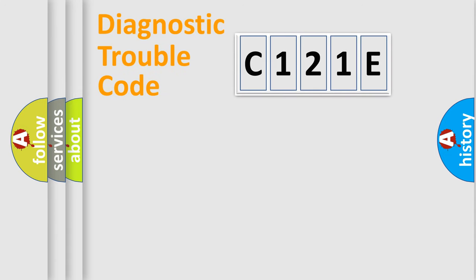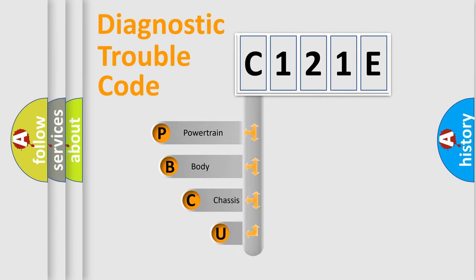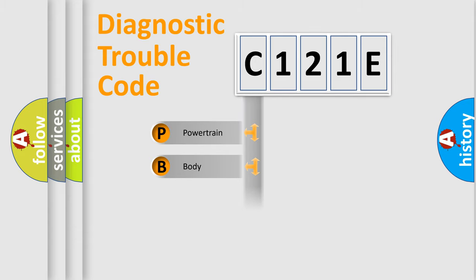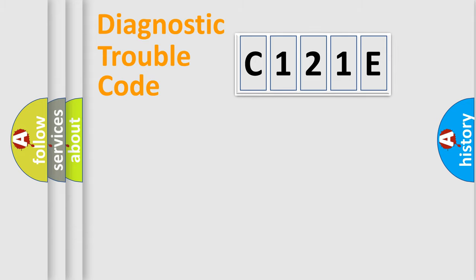First, let's look at the history of diagnostic fault code composition according to the OBD2 protocol, which is unified for all automakers since 2000. We divide the electric system of the automobile into four basic units: Powertrain, Body, Chassis, and Network.